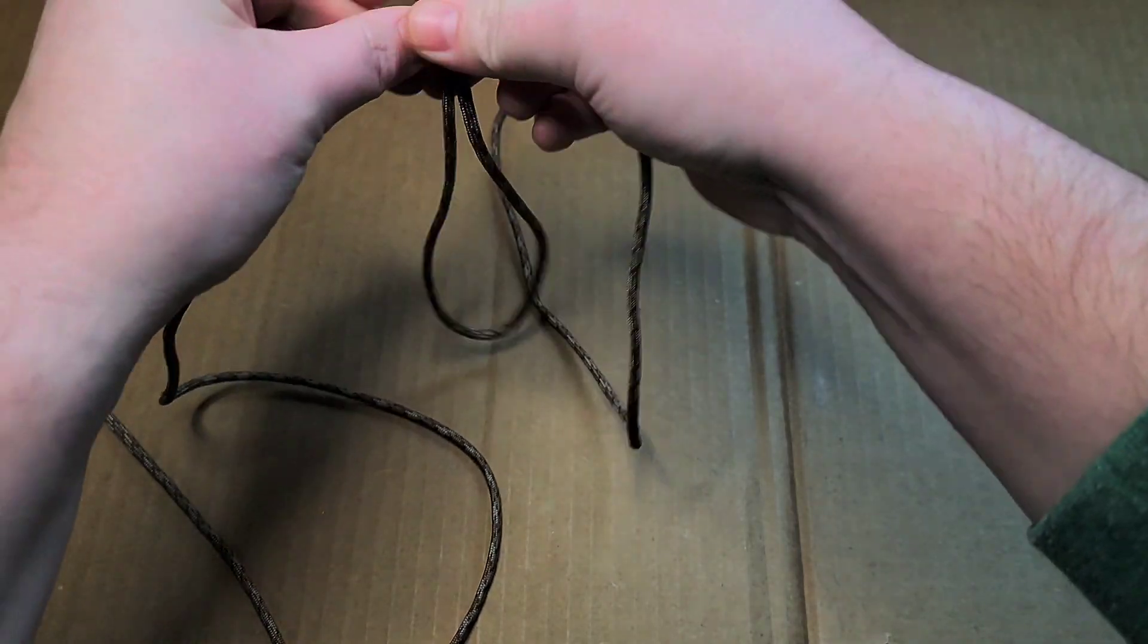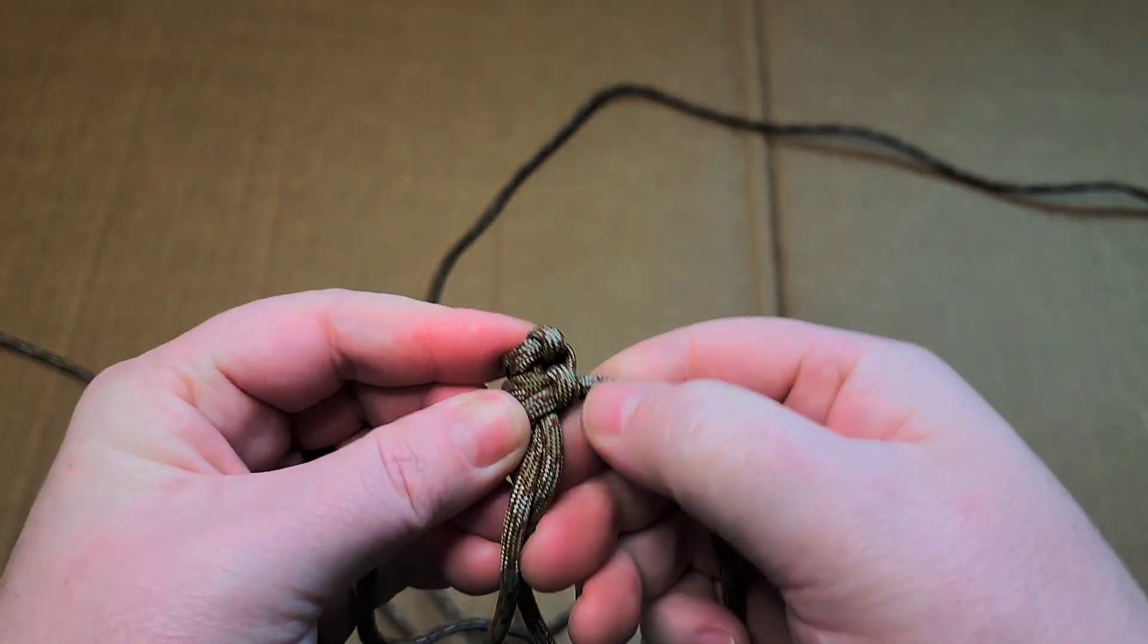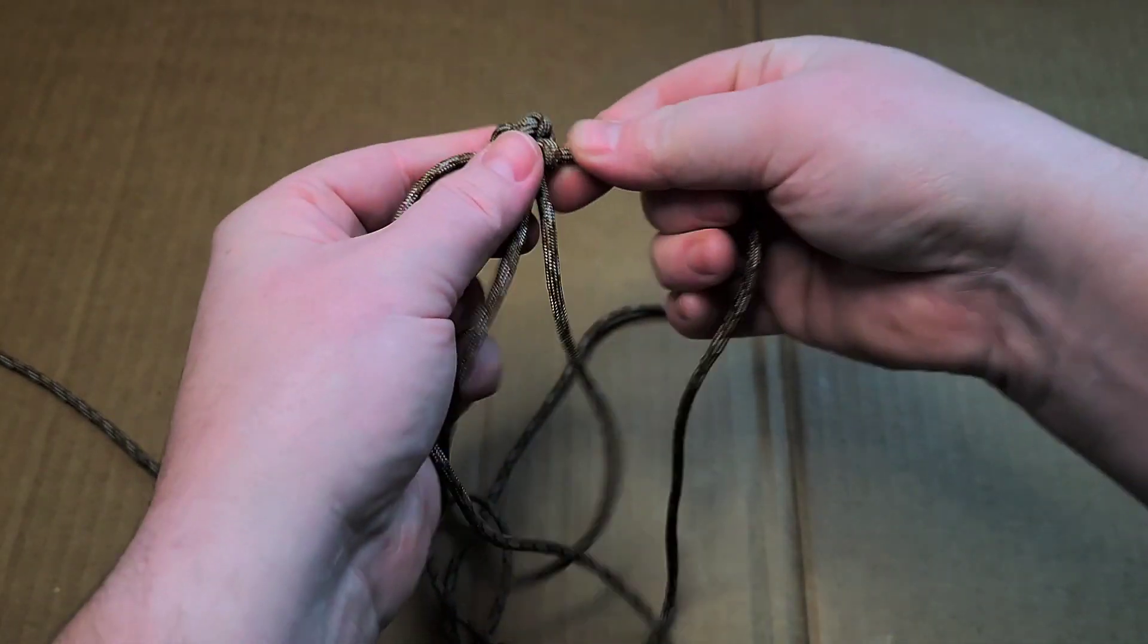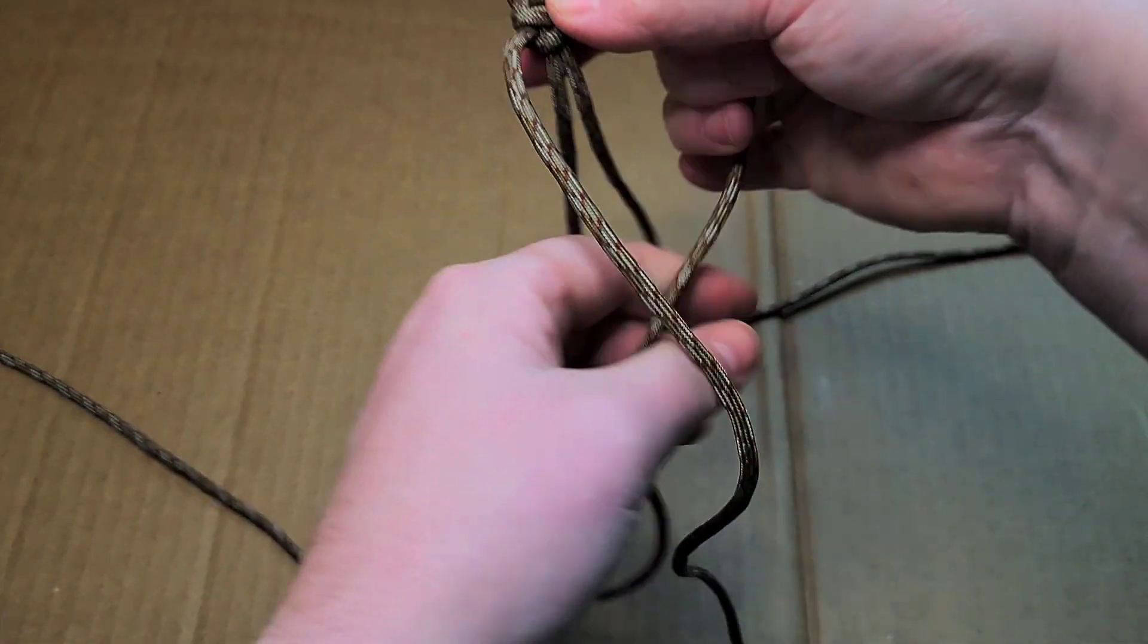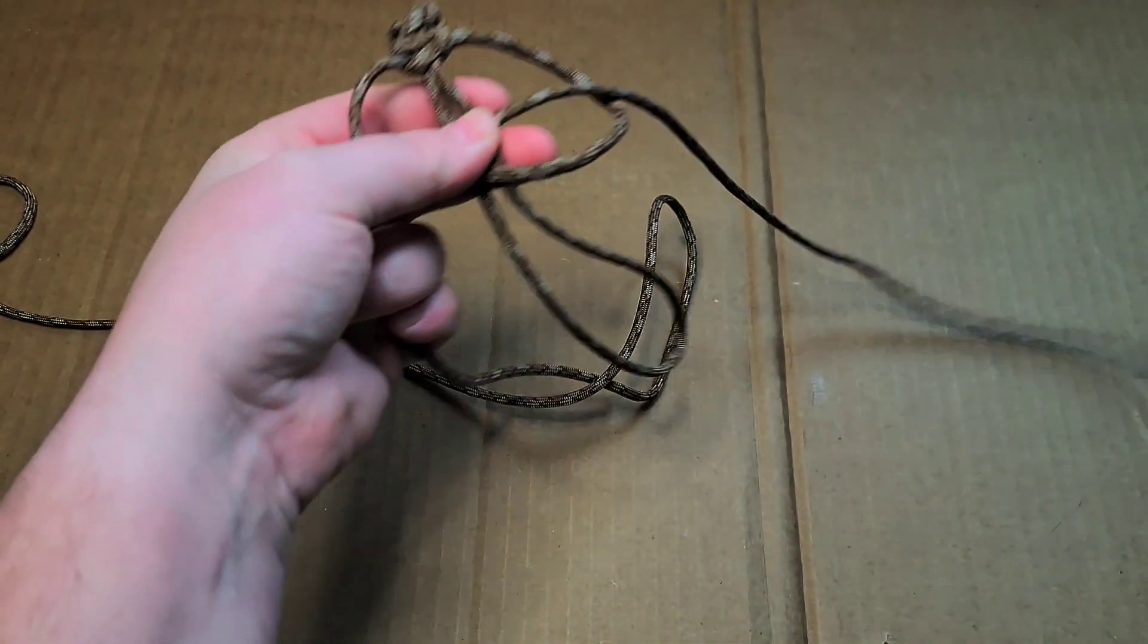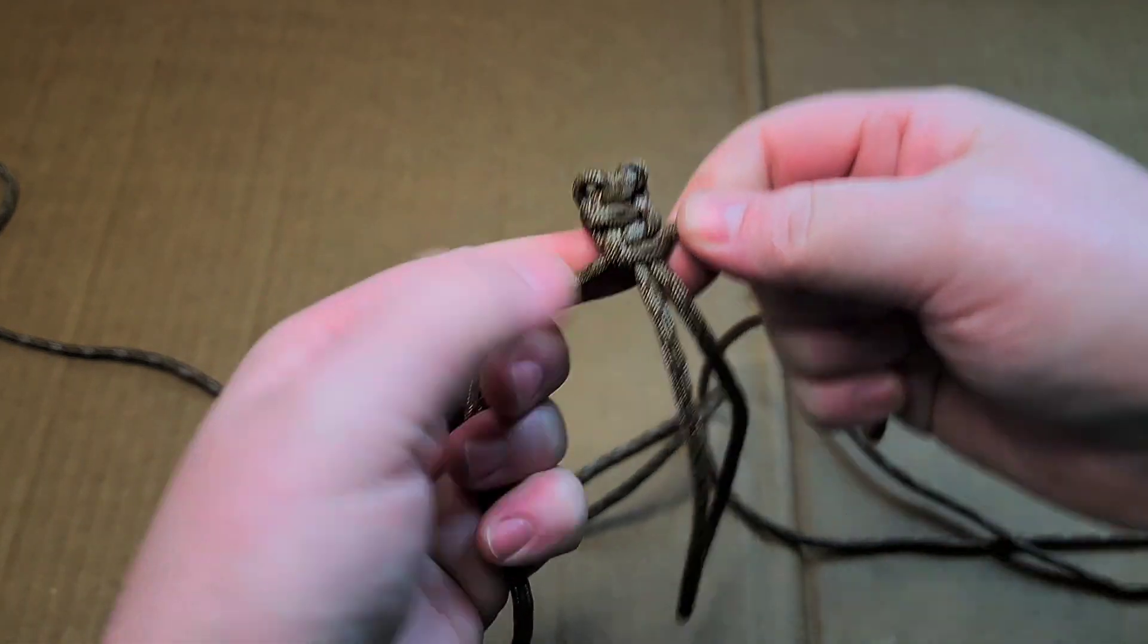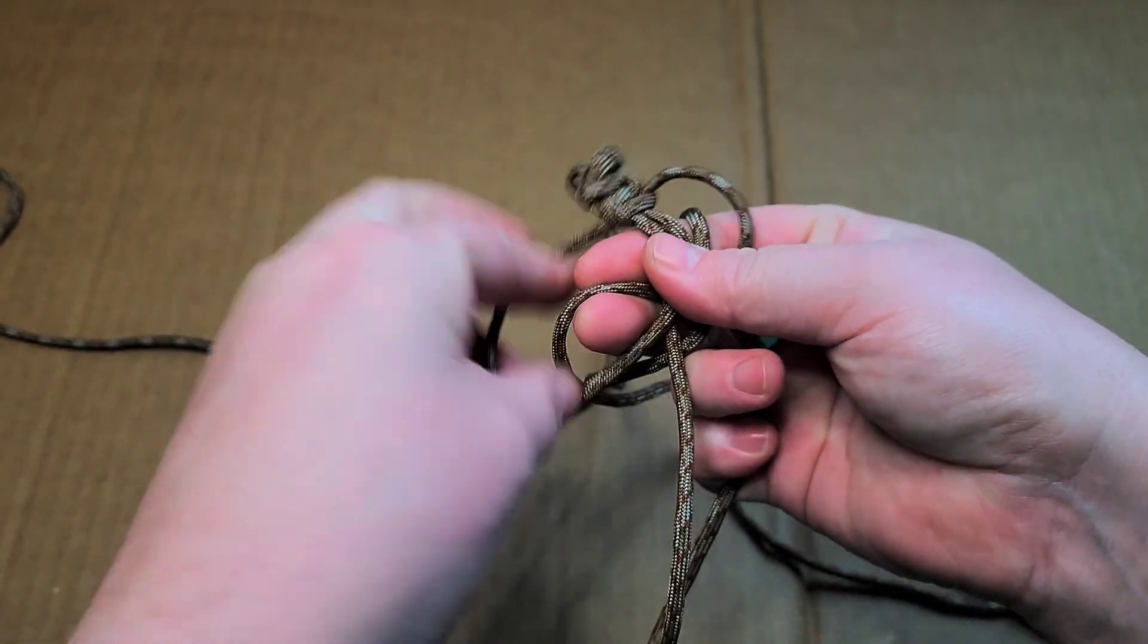So you do the four, this one's on top, go under and through the loop. And then you'll see, now this is on the right. So then you got this on the right, so you're going to start your number four loop right here. So you got a number four, then you take this one, then you go under and through the loop.